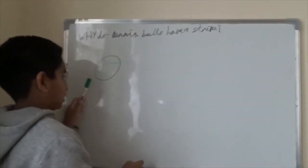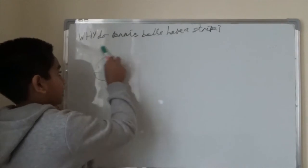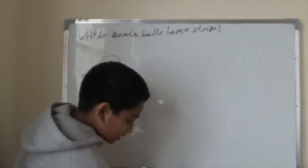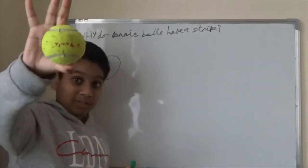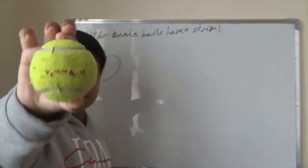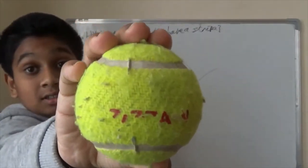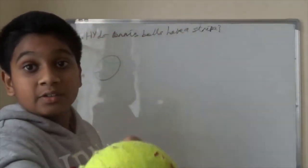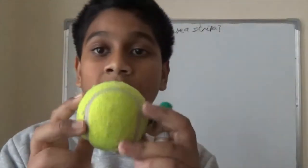So I've actually done a demonstration here of a tennis ball, and I have a real thing. This is a used one. So here, why do tennis balls have a stripe?